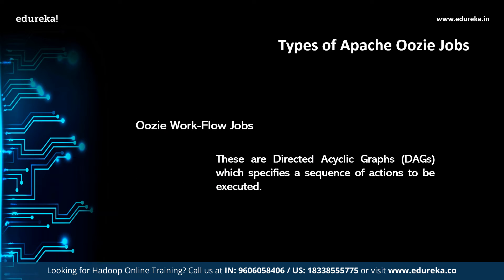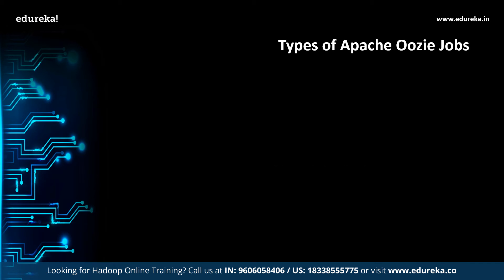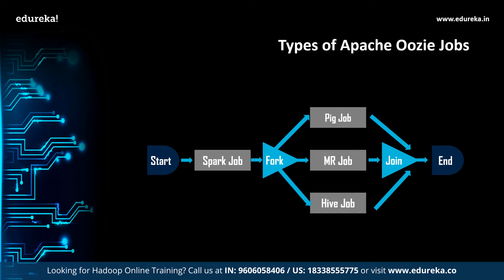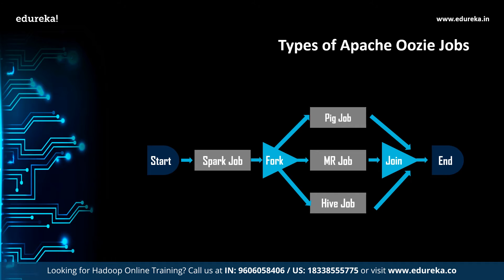First, we shall understand the Oozie workflow. A sample workflow with controls such as start, decision, fork, join, and end — and actions like Apache Hive, Shell, and Apache Pig — will look like the diagram shown. An Oozie workflow is a sequence of actions represented as a directed acyclic graph. The output of the previous action serves as the input for the next. To execute some tasks in parallel, we can use the fork option; the join option is used to merge two parallel tasks into one.